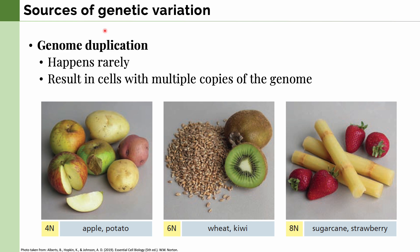In genome duplication, which happens very rarely, cells end up with multiple copies of their genome. We can mostly find this in domesticated plants. For example, apples and potatoes have four copies of their genome; wheat and kiwi have six copies; and sugarcane and strawberry have eight copies.